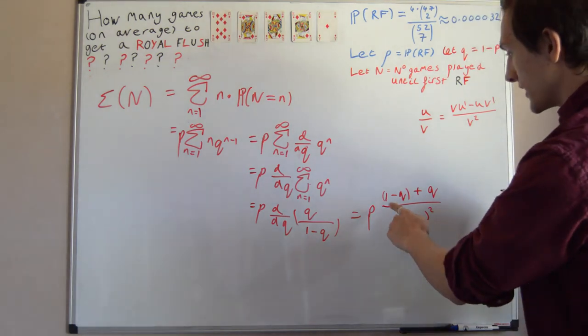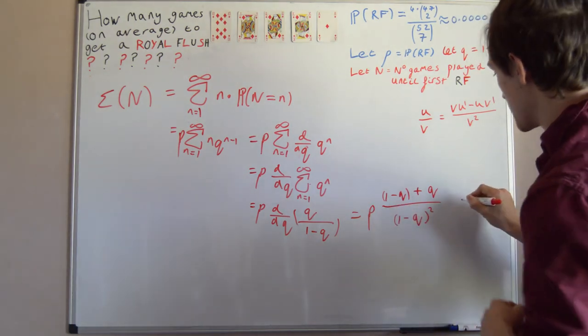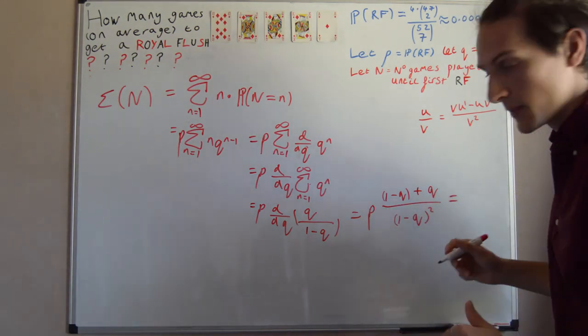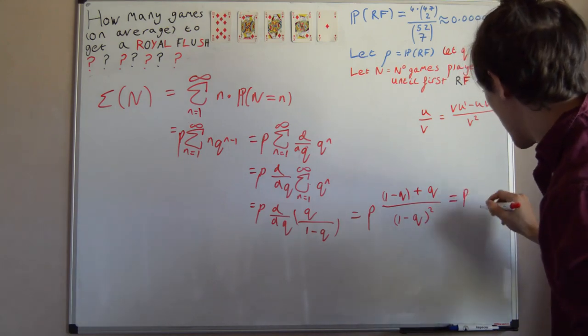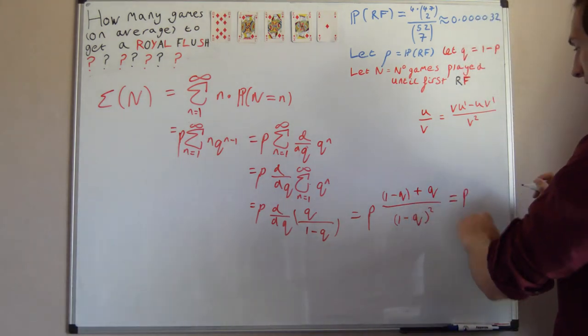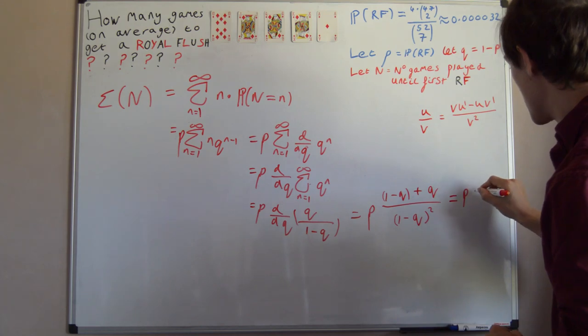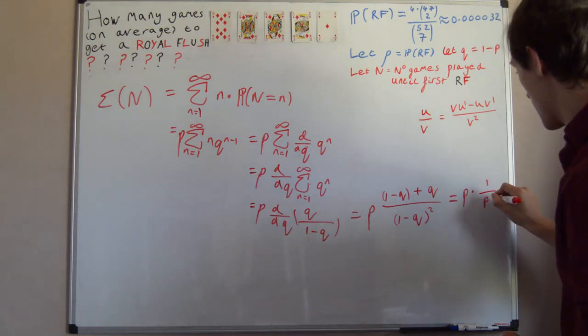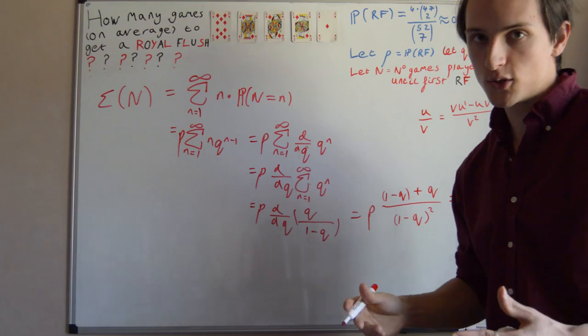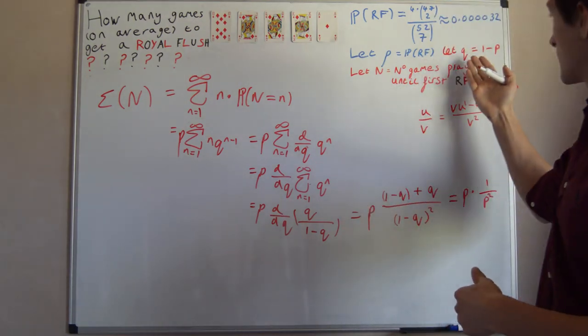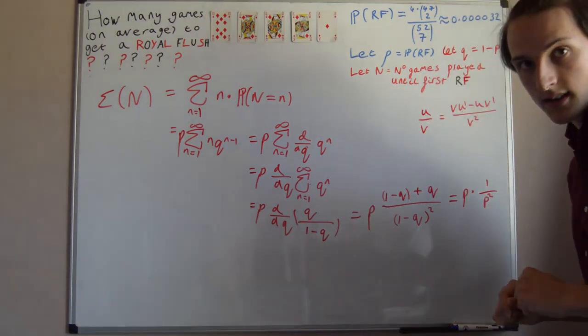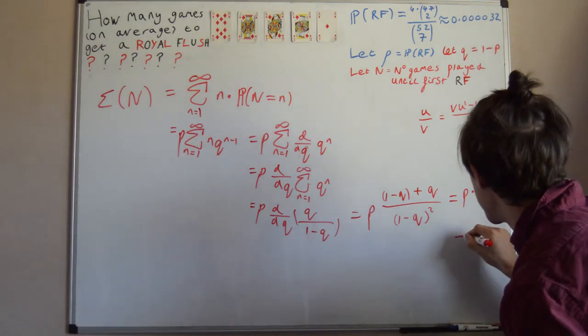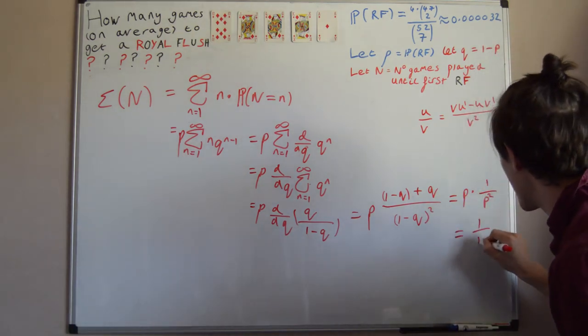How did we define 1 minus Q in the first place? 1 minus Q is defined to be P. So this can be written as, obviously, the Q is going to cancel on the top. So we have P times 1 over P squared, because 1 minus Q was defined to be P. And vice versa, obviously. And this is equal to, well, this cancels, so we get 1 over P. The expected value of N is 1 over P.